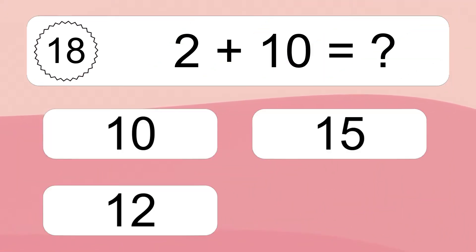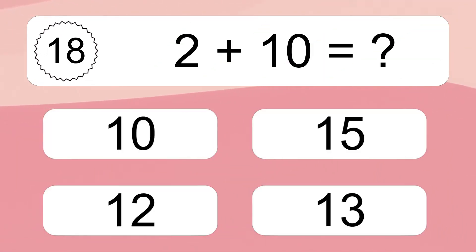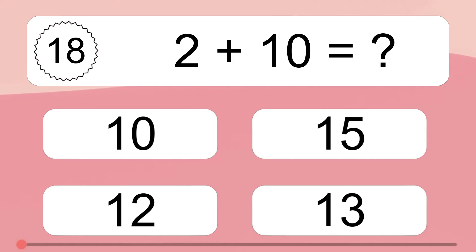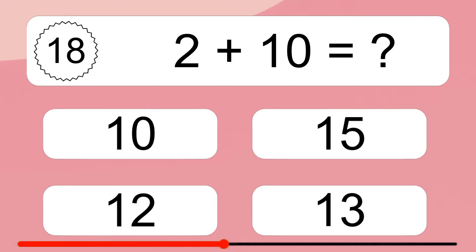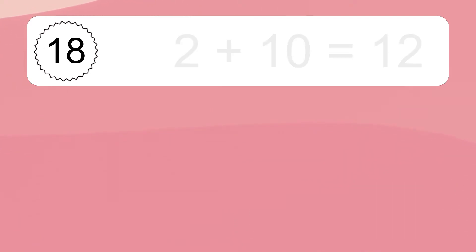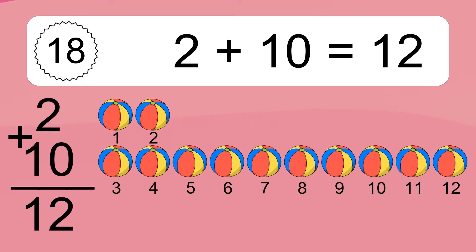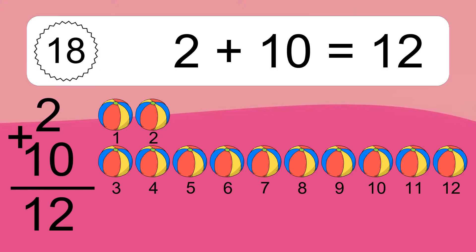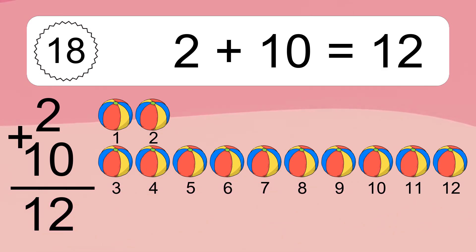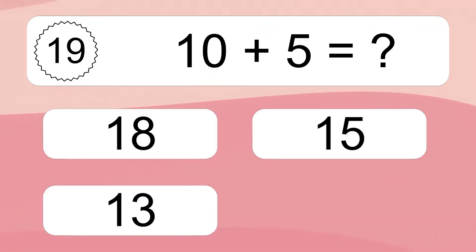2 plus 10 equals what? 2 plus 10 equals 12. Let's count it. 1, 2, 3, 4, 5, 6, 7, 8, 9, 10, 11, 12.